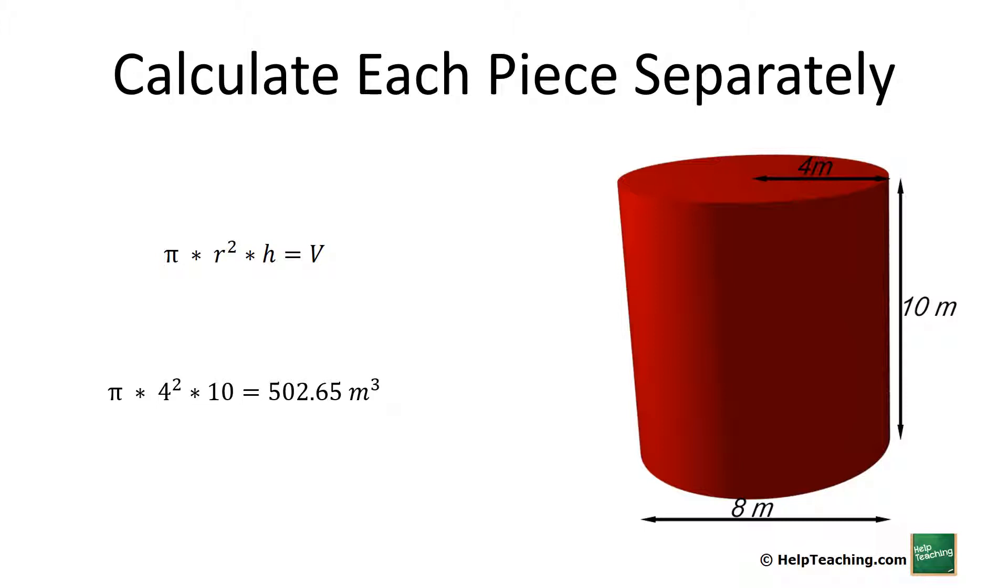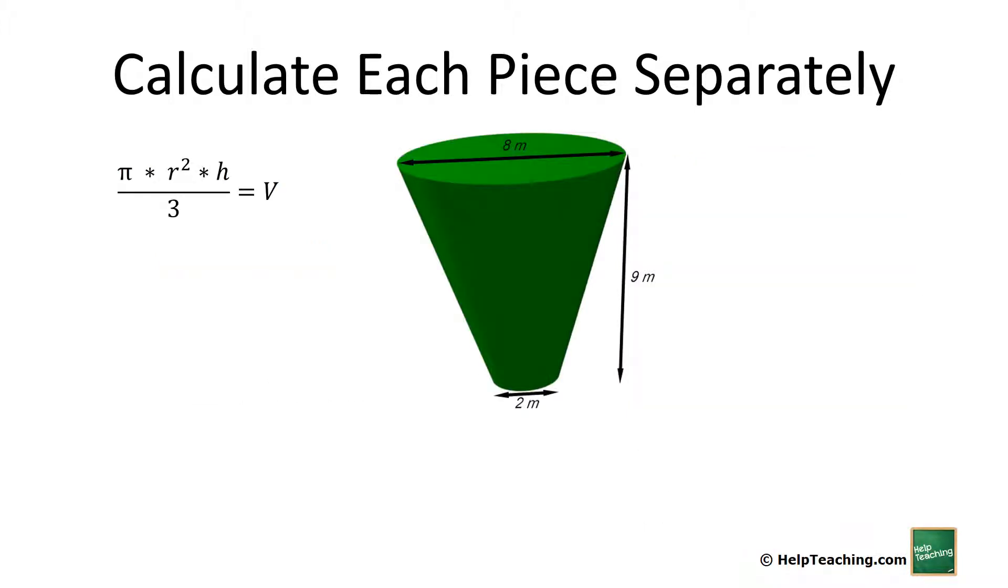The bottom part is quite a bit trickier. The volume for a cone is π r² h, same as a cylinder, but then we divide by 3. This only works if our cone goes all the way to a point.